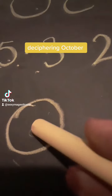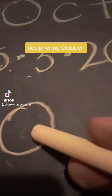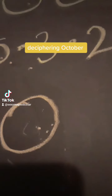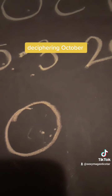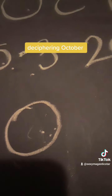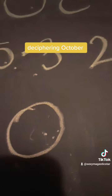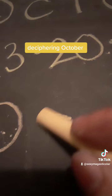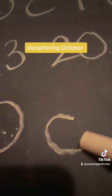I see the letter O as being a fixed sign — Leo, Scorpio, Aquarius, Taurus. Now, how do I see the letter C? I see the letter C as cardinal.